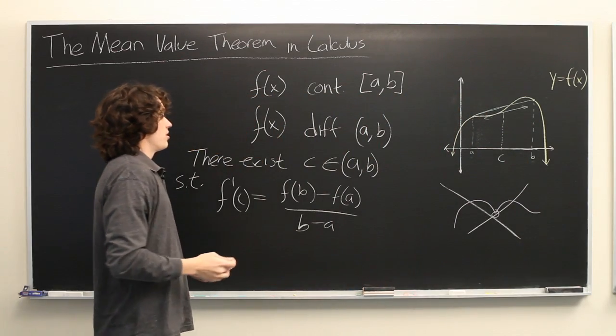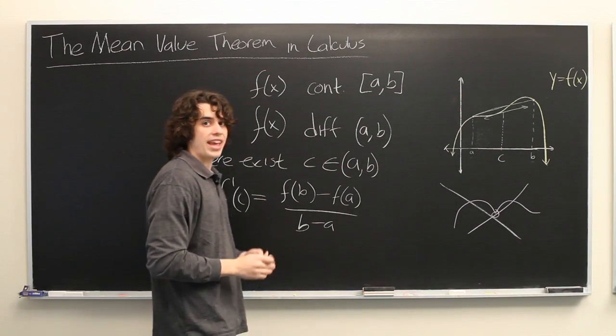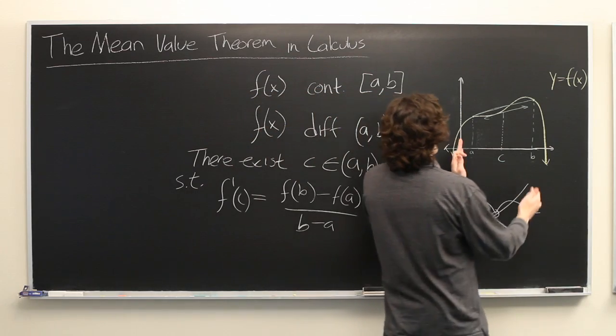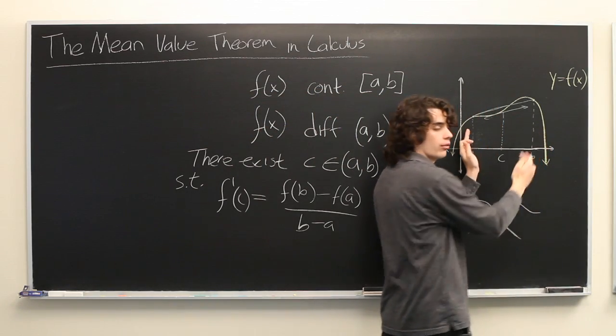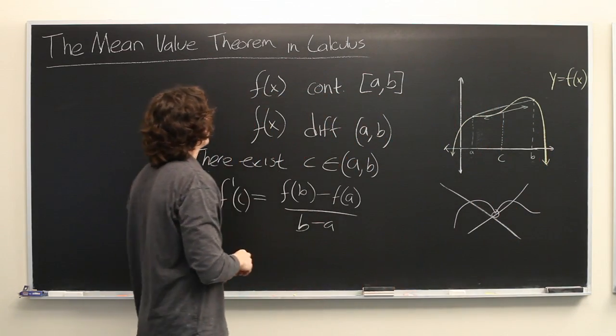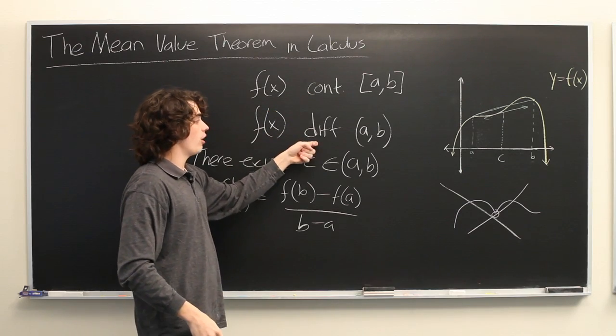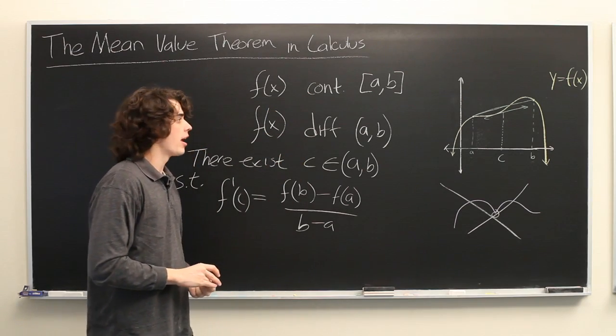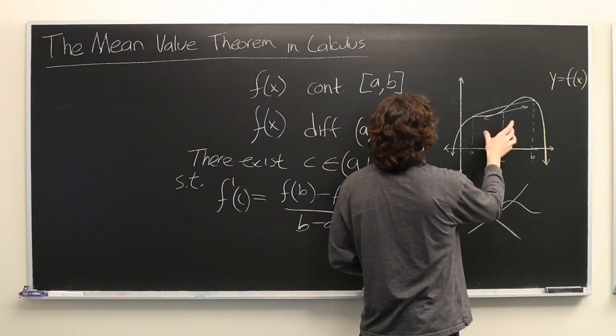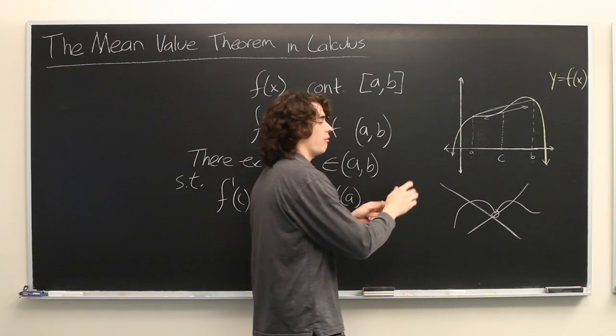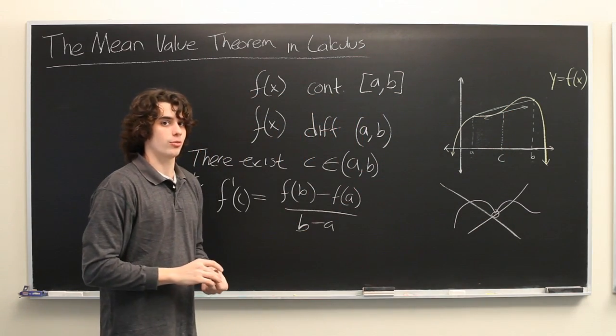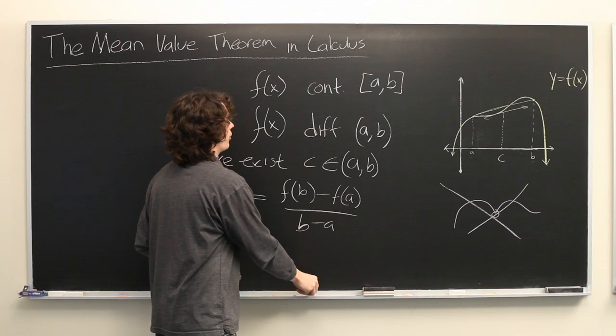So, essentially what this is saying is, if you look at the average rate of change of a function on some interval, as long as the function is continuous and differentiable on that interval, there will exist some point on the function in that interval, whose derivative is equal to the average rate of change. Very cool theorem.